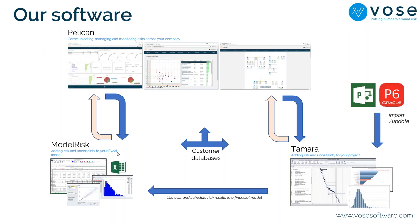You can use external risk registers in Tomorrow, and also in Pelican. Model Risk is our spreadsheet risk analysis software — the subject of the next webinar. Tomorrow results can be fed into Model Risk, and Model Risk can pull information from Pelican and deliver information back into Pelican.